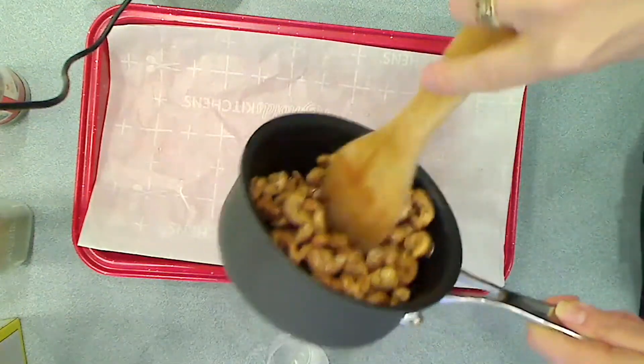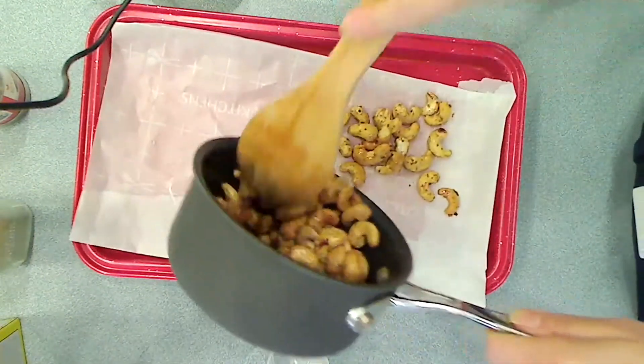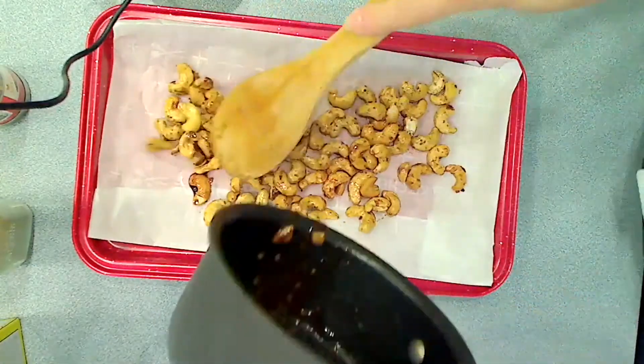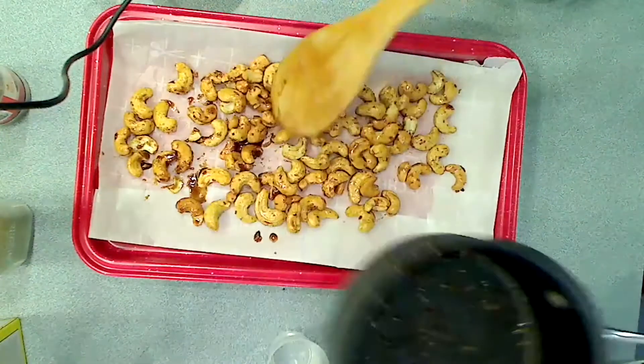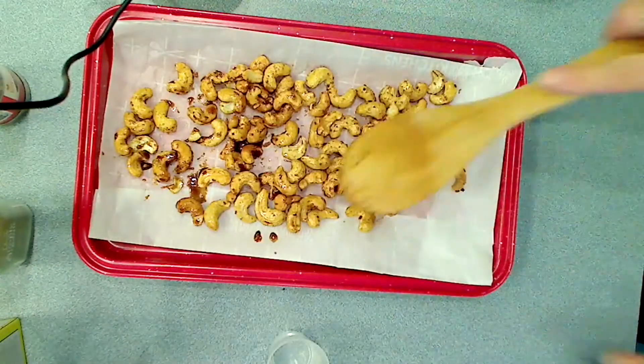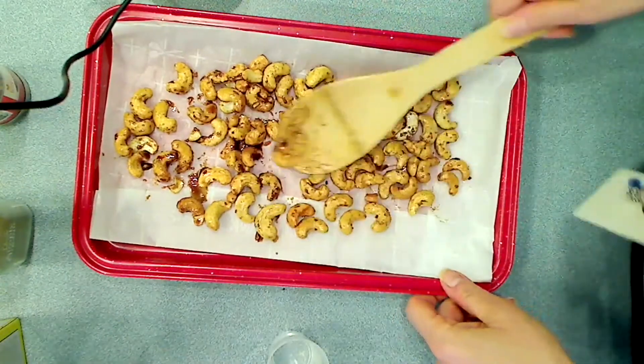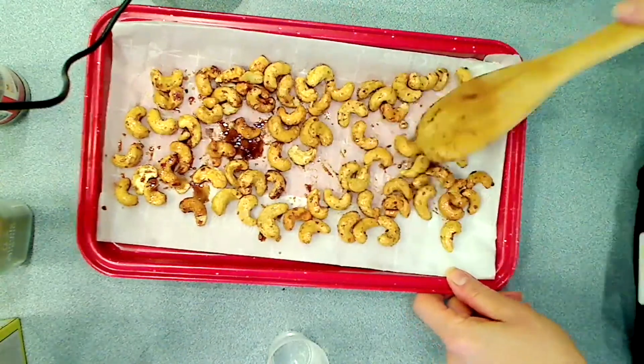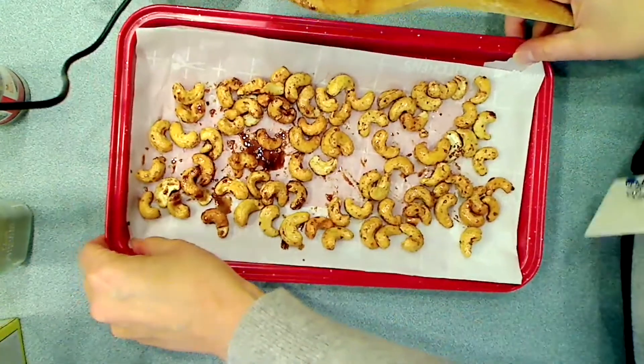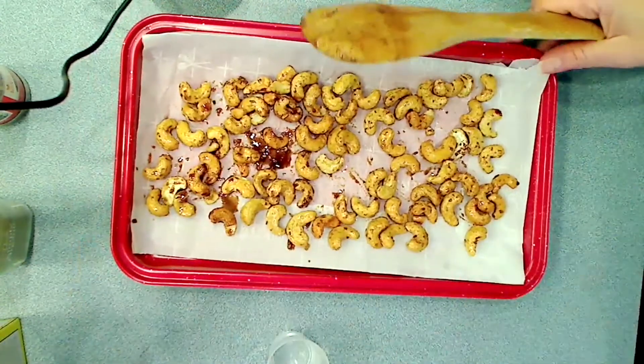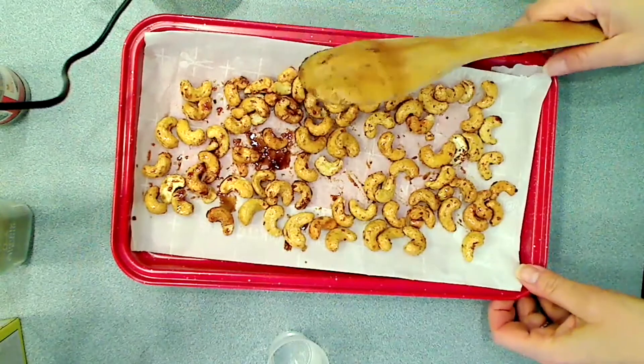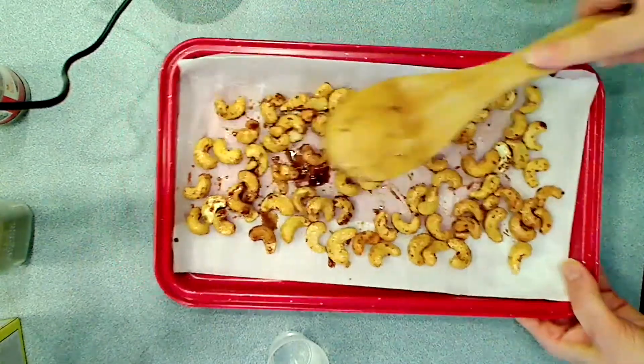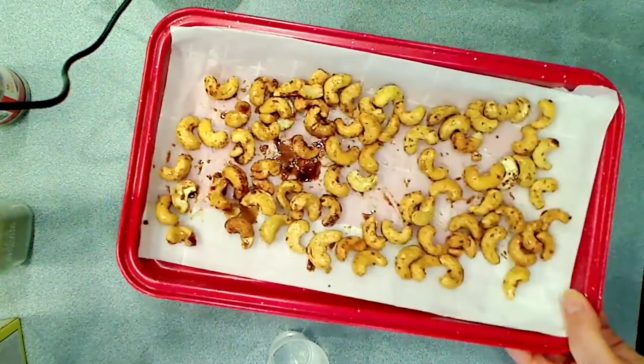Then I'm going to put them on a piece of parchment in a baking pan. Spread them out. And you're going to put this into a preheated 350 degree oven for about seven minutes. So it's really quick. Get in the oven.